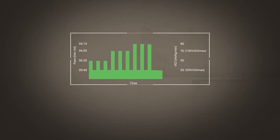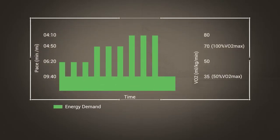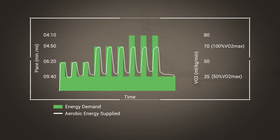Look at this graph. In this example of high-intensity intervals, the total energy demand is represented by the green area. In the case of the last three intervals, the total energy needed is greater than what can be supplied by aerobic sources alone. Therefore, the striped area represents a measurement of the anaerobic work done.